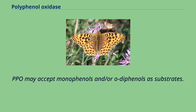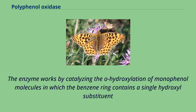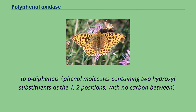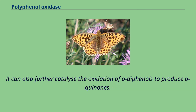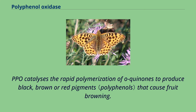PPO may accept monophenols and/or O-diphenols as substrates. The enzyme works by catalyzing the O-hydroxylation of monophenol molecules, in which the benzene ring contains a single hydroxyl substituent, to two O-diphenols. It can also further catalyze the oxidation of O-diphenols to produce O-quinones. PPO catalyzes the rapid polymerization of O-quinones to produce black, brown or red pigments that cause fruit browning.